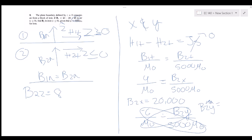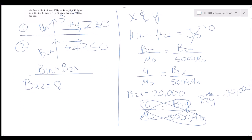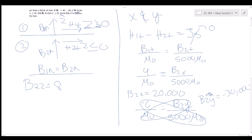B2y would equal negative 30,000. So our final answer for the B field for b2 would be x-hat 20,000 minus y-hat 30,000.